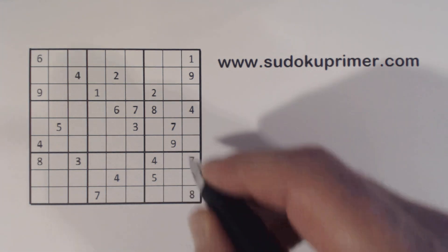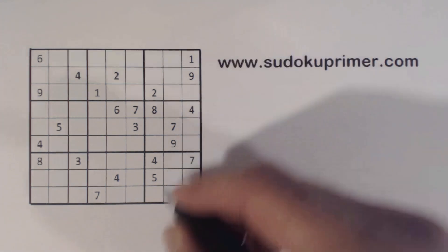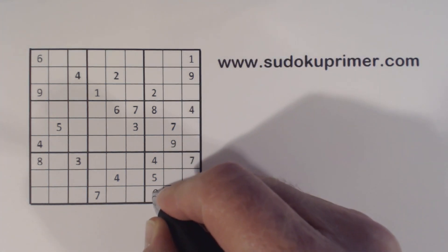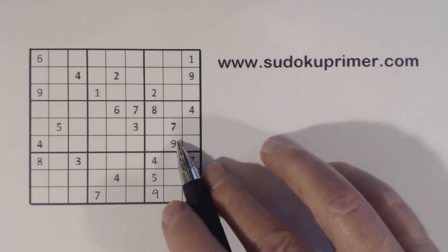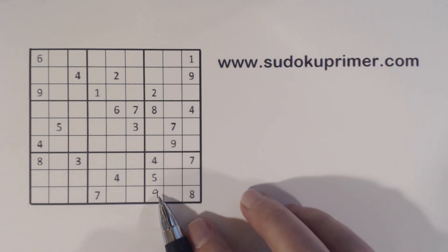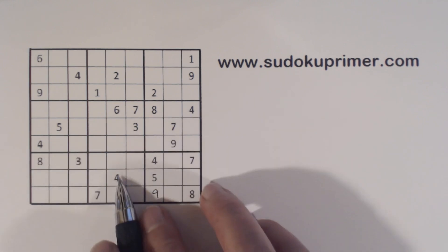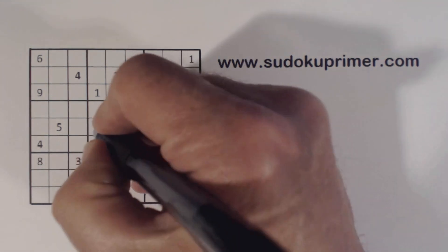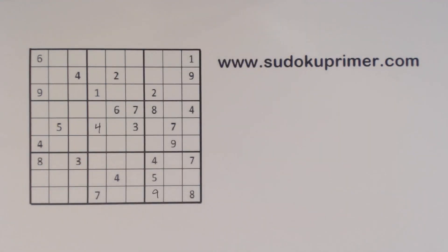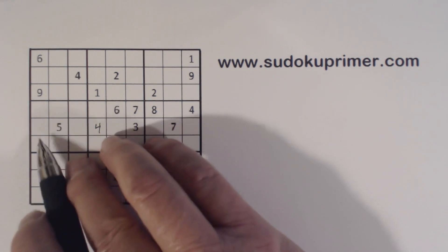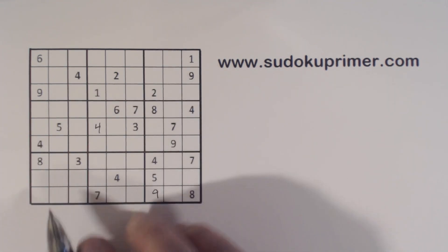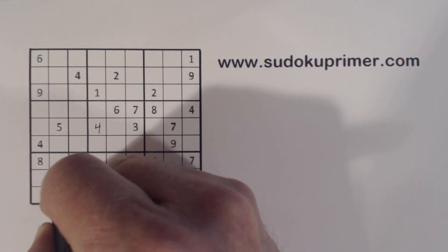We'll start by putting a nine here, and then we've got a 4 there.